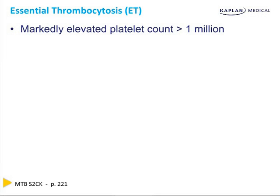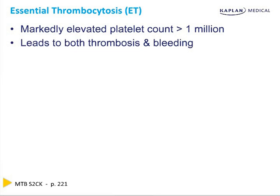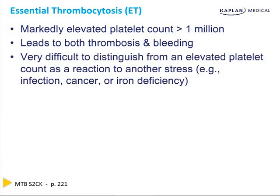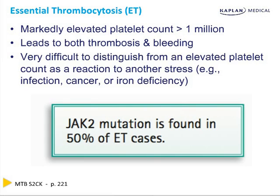The next disorder is essential thrombocytosis, sometimes called essential thrombocytemia. 'Essential' means the cause is unknown — it's platelet cancer. Just as CLL is lymphocyte cancer, CML is neutrophil cancer, and polycythemia vera is red cell cancer, this is platelet cancer. Because the platelet count is up so high, sometimes they work too much and you thrombose; sometimes they don't work enough and you bleed. There's a JAK2 mutation in about half of cases, and a really high platelet count plus JAK2 mutation makes the diagnosis.